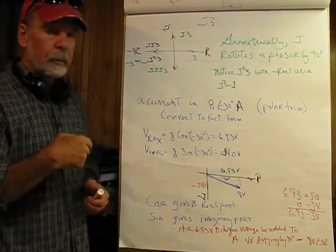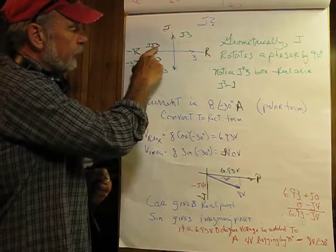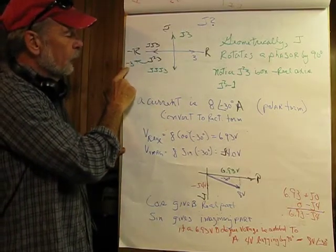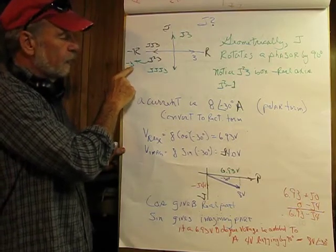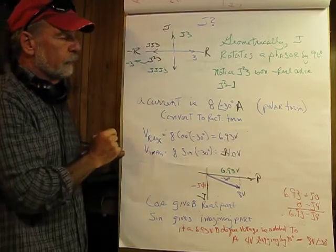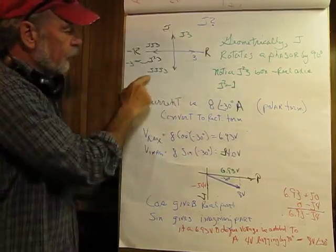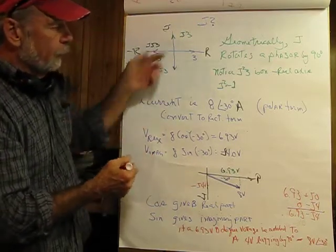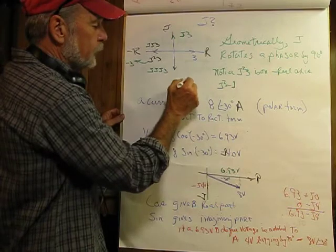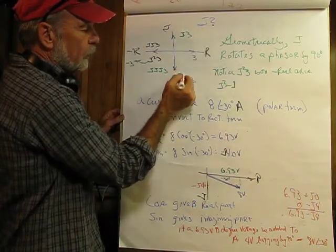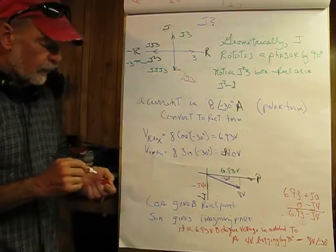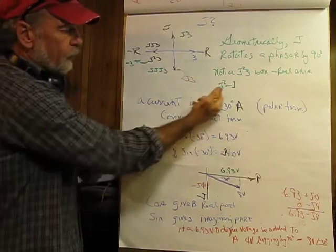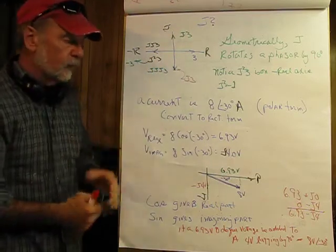If we take j3 and multiply it by j again, we get j squared times 3. We see we're on a negative real axis, so j squared is the same as negative 1 times our value of 3, giving us negative 3. If we rotate again by 90 degrees, we end up with j cubed times 3. Multiplying by negative j3 would take that 3 and move it down to negative j3. In a geometrical sense, it's easy to see that j is just rotation by 90 degrees. So j squared equals negative 1; in mathematics, i squared equals negative 1.